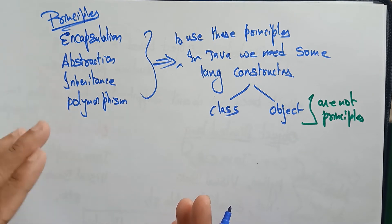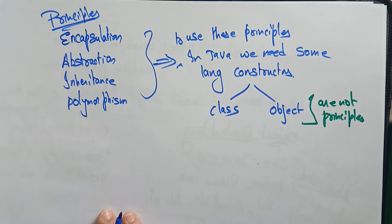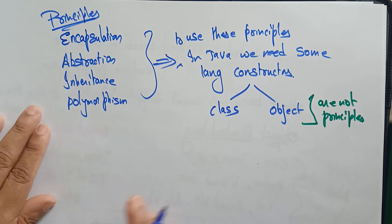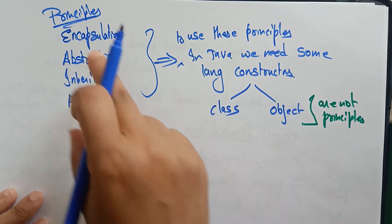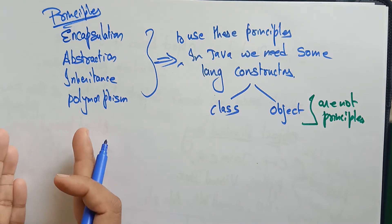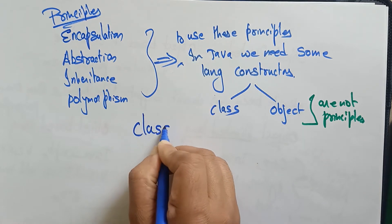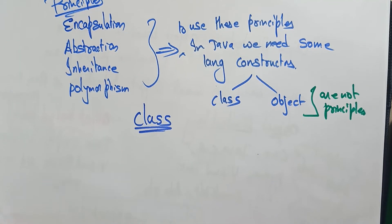These four principles also have sub-principles, like data hiding, data binding, and so on. Class and object are language constructors — not principles. To implement these principles in Java, we use class and object. In this video I'm going to explain what exactly a class is, and in the next video we will discuss the object.